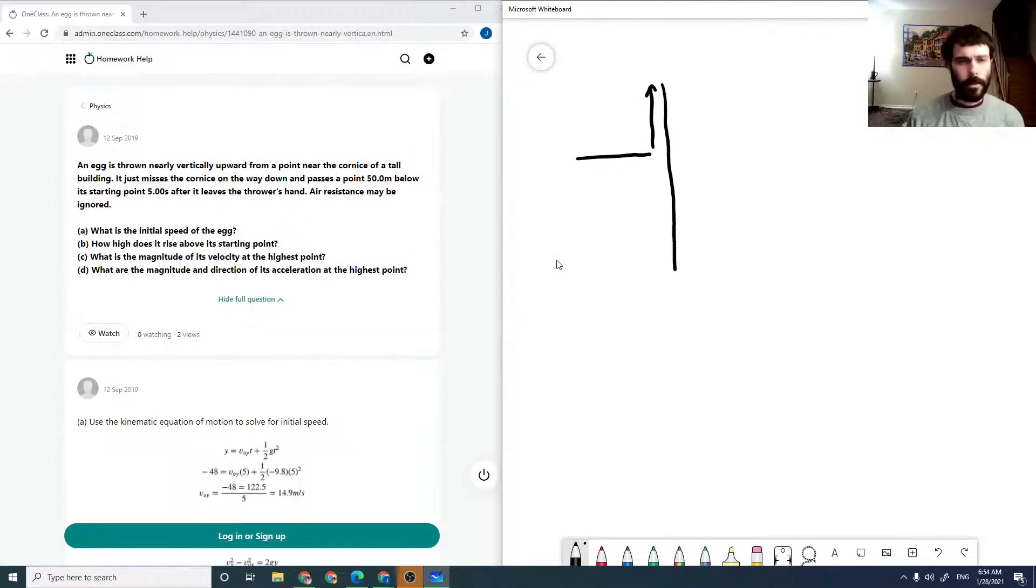It says it just passes a point 50 meters below its starting point five seconds after it leaves the thrower's hand. So it goes up and then comes back down and so it reaches this point at t equals five seconds.